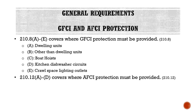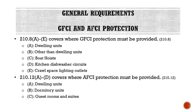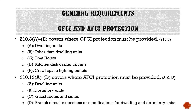Section 210.12A through D covers where AFCI protection must be provided — same concept as 210.8 but for AFCI protection. Part A covers dwelling units, Part B covers dormitory units, Part C covers guest rooms and suites, and Part D covers branch circuit extensions or modifications for dwelling and dormitory units — meaning where we are modifying or adding on to an existing circuit in those locations.